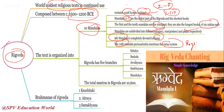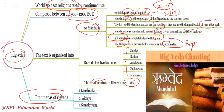Rigveda has five branches: Sakalya, Baskala, Aswalayana, Sankhyana, and Mandukya. The total mantras in Rigveda are 10,600. The Brahmanas of Rigveda are: Kaushitaki Brahmana, Aitreya Brahmana, and Samakhyana Brahmana. Aitreya Brahmana is the most important and is asked frequently. Remember: Kaushitaki, Aitreya, and Samakhyana — these three are important.